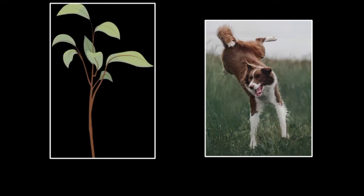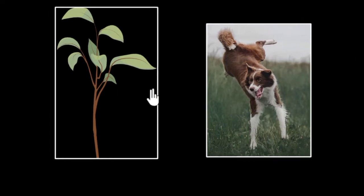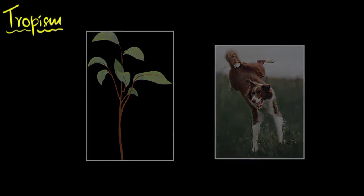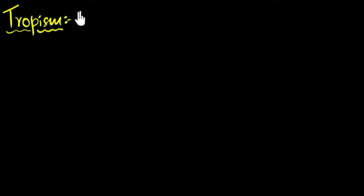Animals keep moving around in response to environmental stimuli, but what about plants — do they move? The answer is yes. Even though it is not as obvious as animals, plants do move and respond to various environmental stimuli. Let's now talk about tropism, or tropic movement. Tropism is a kind of turning movement.